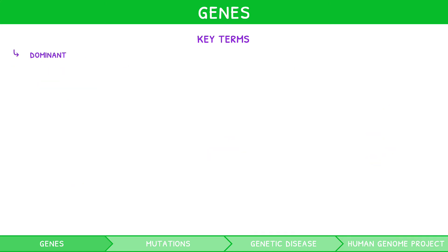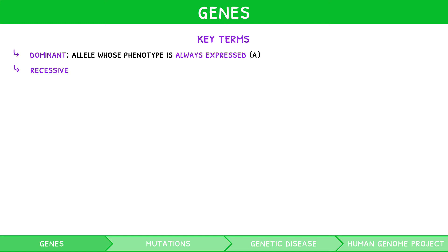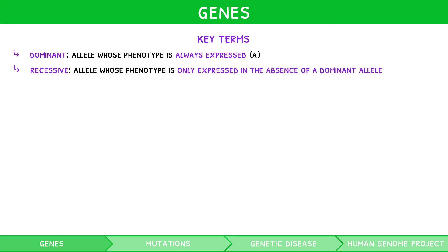Dominant: an allele whose phenotype is always expressed. They are represented with uppercase letters. Recessive: an allele whose phenotype is only expressed in the absence of a dominant allele. They are represented with lowercase letters.